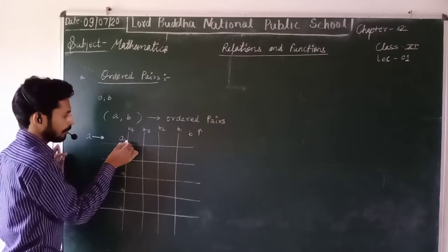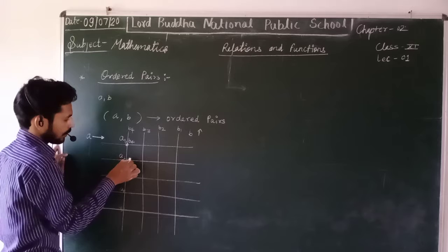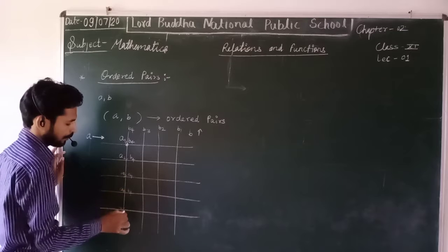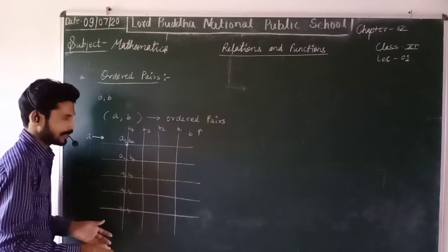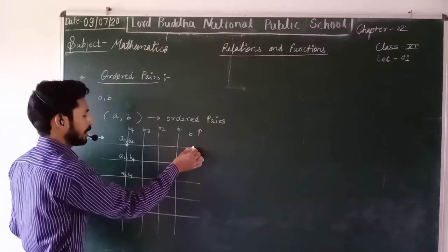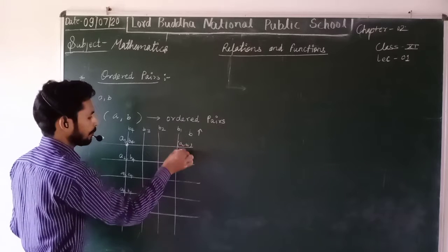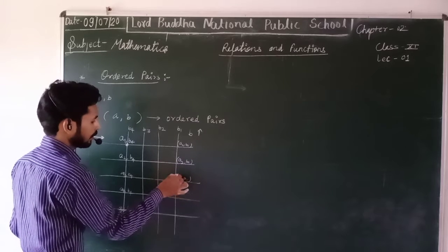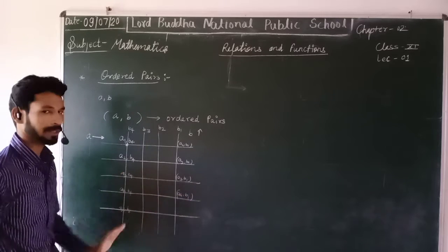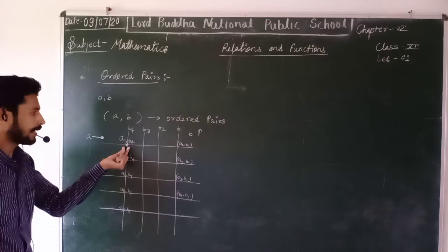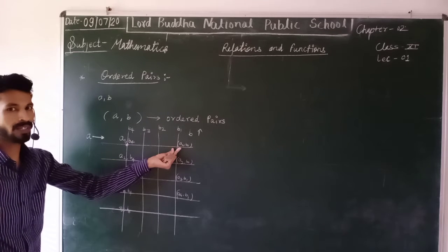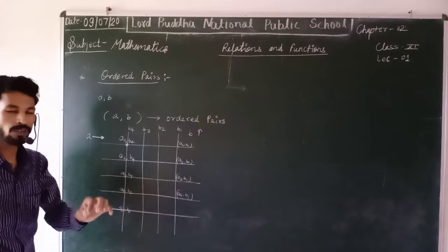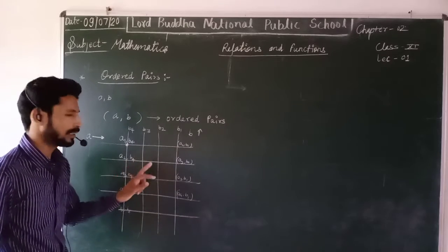So a point will be shown as A1 comma B4, A2 comma B4, A3 comma B4, A4 comma B4 — like this we can represent them. To identify a point correctly, we use the ordered pair, which is the systematic way to represent two things together.